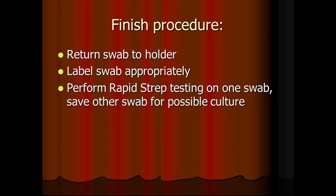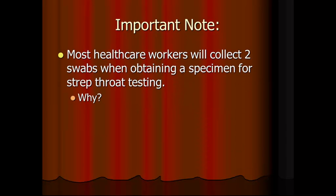Return the swab to the holder, label the swab appropriately, and perform the rapid strep testing on one swab and save the other one for possible culture. It is important to always collect two swabs when doing a throat swab — we can do the rapid strep testing right away and then send the other one for culture. Typically if we only had one swab we should do the culture first, and in smaller labs we don't always have the ability to culture right there, so that's why it's important to collect two swabs.